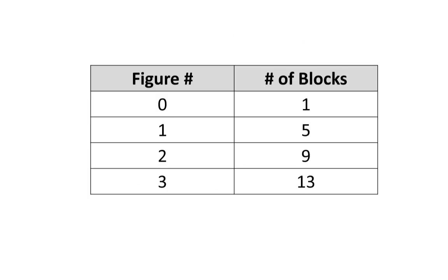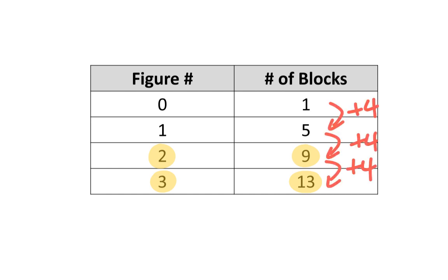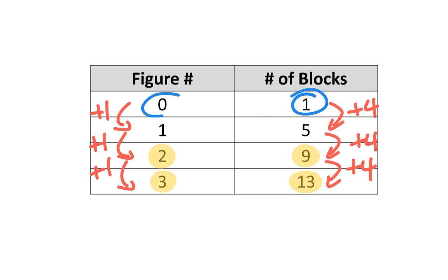We did the exact same thing with a table of values. We extrapolated the number of blocks in figure 3 and we interpolated the number of blocks in figure 2. You may have also noticed the rate of change was an increase of 4 blocks for every 1 figure. Furthermore, the initial value here is 1 block, since that is the number of blocks in figure 0.